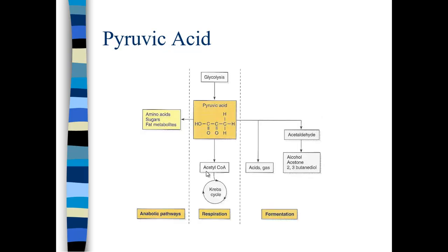Pyruvic acid doesn't directly go into the Krebs cycle — it has to be converted into acetyl-CoA. We call that the preparatory reaction. When it is converted into acetyl-CoA, it also breathes off carbon dioxide. Pyruvic acid has three carbons, acetyl-CoA has two carbons, and that third carbon is breathed off as carbon dioxide. The preparatory reaction is just the conversion of pyruvic acid to acetyl-CoA and CO2.